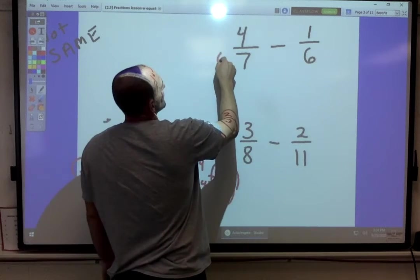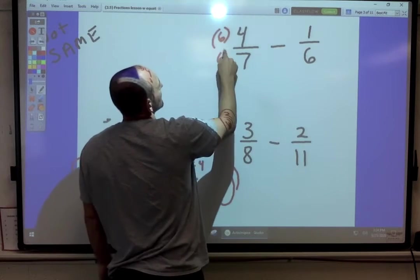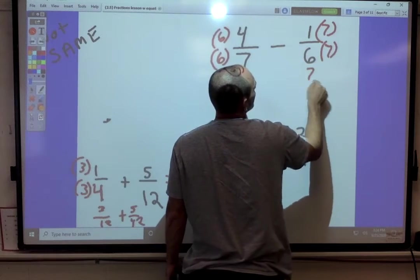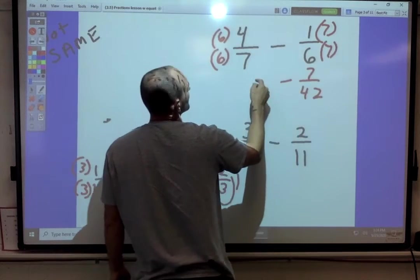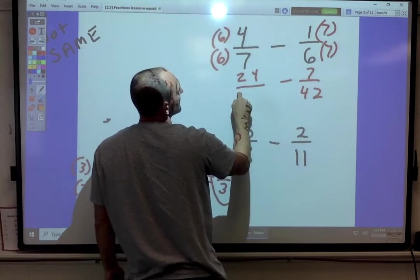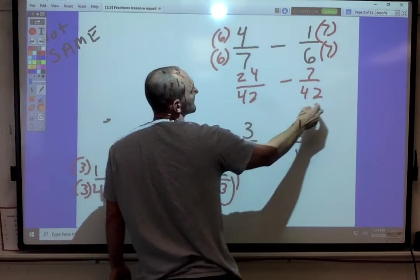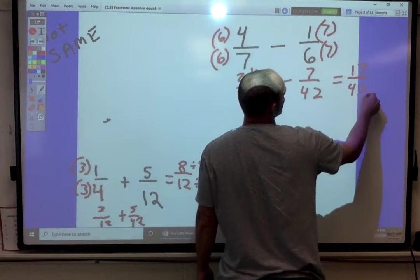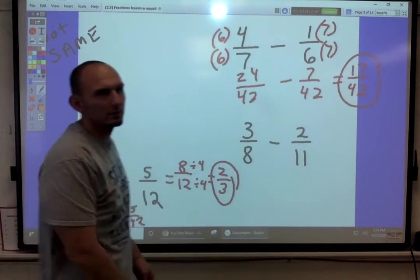Number six, that way, number seven, seven forty-seconds, around twenty-four forty-seconds. Here's seventeen. That's a prime number. Seventeen's prime. We're done.